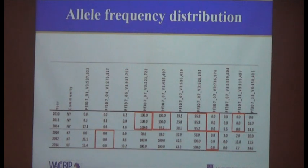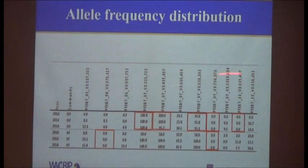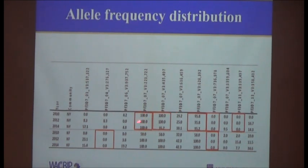For the allele frequencies, there was no particular trend. Some alleles were increasing over the course of IRS and some were decreasing. But notably, some highlighted alleles showed no change in frequency over the course of IRS — they remained at 100%.